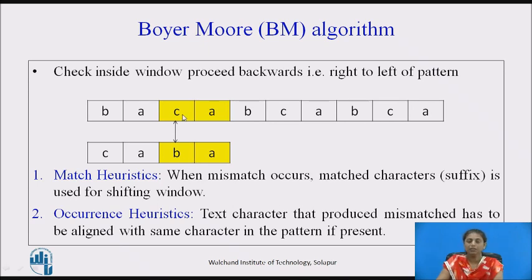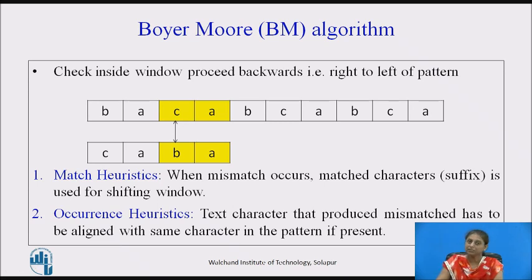For example, if the mismatch character is C, we check whether C is present in the pattern. If it is present, we need to align the pattern to the position of C. We will look at one example to understand this.